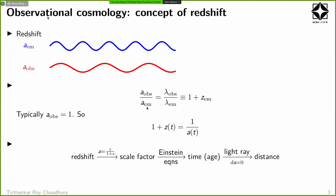How much the wavelength expands is exactly given by how much the universe has expanded. The ratio of the observed and emitted wavelengths is exactly given by the ratio of the scale factors. So if the universe expanded by a factor of 2, the wavelength of light also expands by a factor of 2. The ratio of these wavelengths defines the redshift Z, and 1 plus Z equals the inverse of the scale factor.